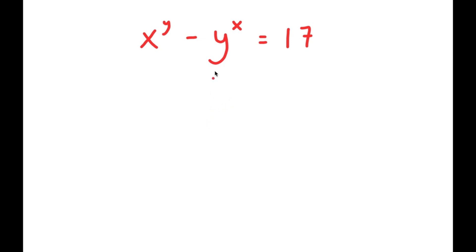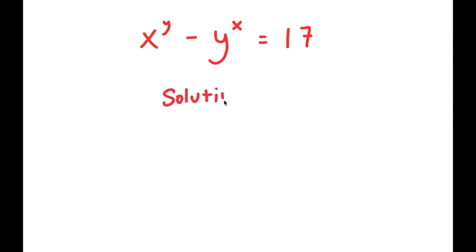All right, so in this problem, I have x to the power of y minus y to the power of x is equal to 17. To solve this problem, I'm going to first rewrite the equation right here.